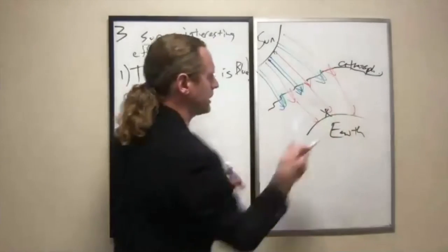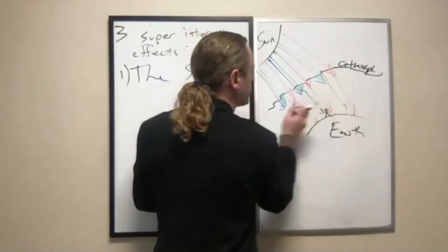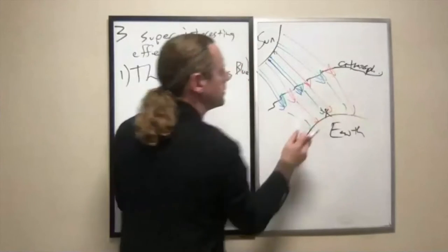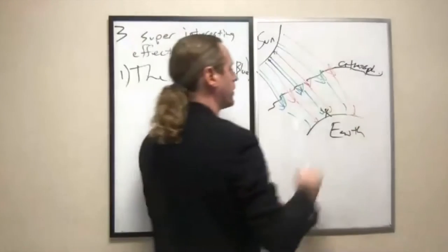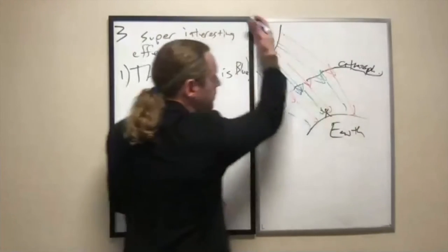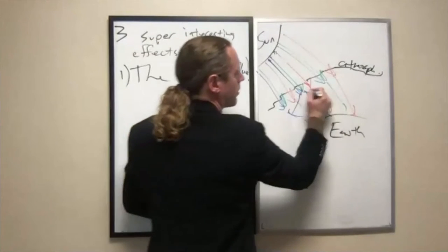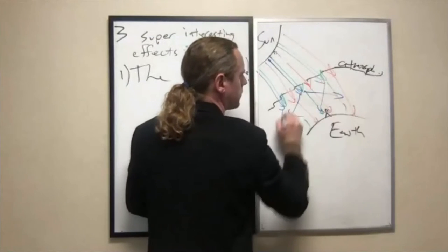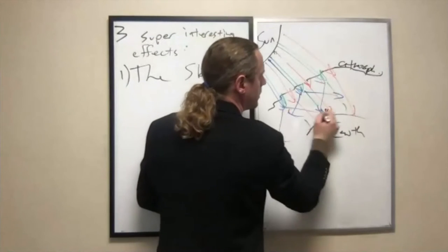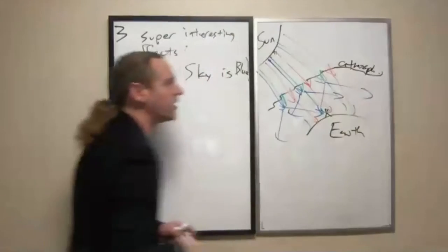The green light, for the most part, is a little bit scattered, but the blue light tends to get just scattered all around. So instead of the blue light passing straight through, it gets scattered there, or there — blue light gets scattered in all directions.